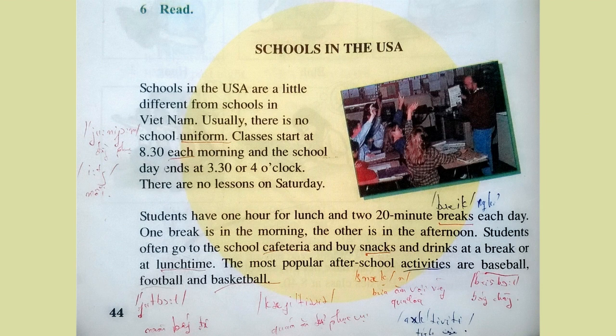Read, pages 46 and 47. Schools in the USA. Schools in the USA are a little different from schools in Vietnam. Usually, there is no school uniform. Classes start at 8.30 each morning, and the school day ends at 3.30 or 4 o'clock. There are no lessons on Saturday. Students have one hour for lunch and two 20-minute breaks each day. One break is in the morning, the other is in the afternoon. Students often go to the school cafeteria and buy snacks and drinks at lunchtime or at break. The most popular after-school activities are baseball, football, and basketball.